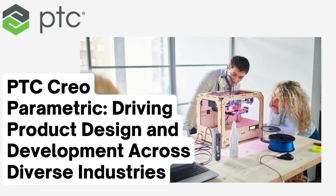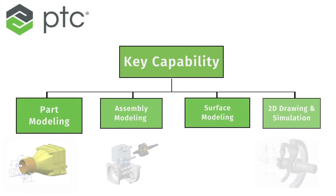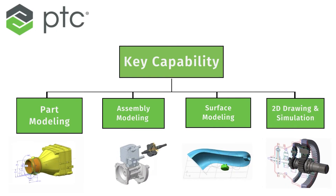It is used for product design and development across various industries. Its key capabilities include part modeling, assembly modeling, surface modeling, 2D drawings, and simulation. It is one of the very initial 3D parametric modeling software, which evolved from Pro/Engineer, and is now part of the Creo suite of design tools.